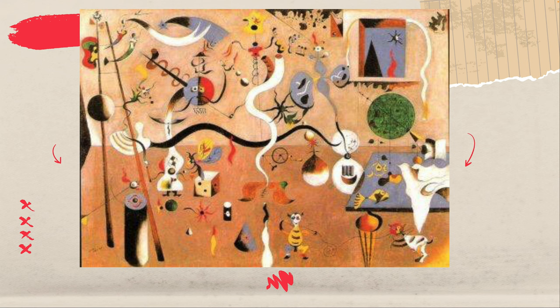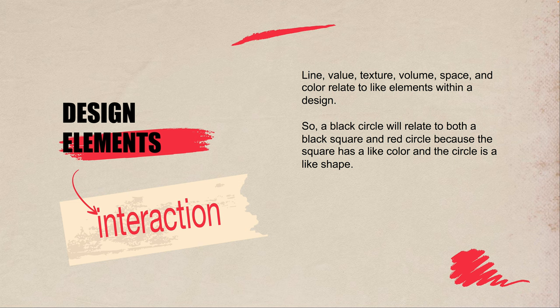Objects can also relate to each other. As designers, we can have objects relate to each other either by type or by color — they can have multiple relationships. These two objects are a similar shape, so they'll have a contextual relationship. This black squiggly and this white squiggly will have a relationship because they're similar shapes, even though they're different colors. Elements like line, value, texture, volume, space, and color can all relate elements within a design.